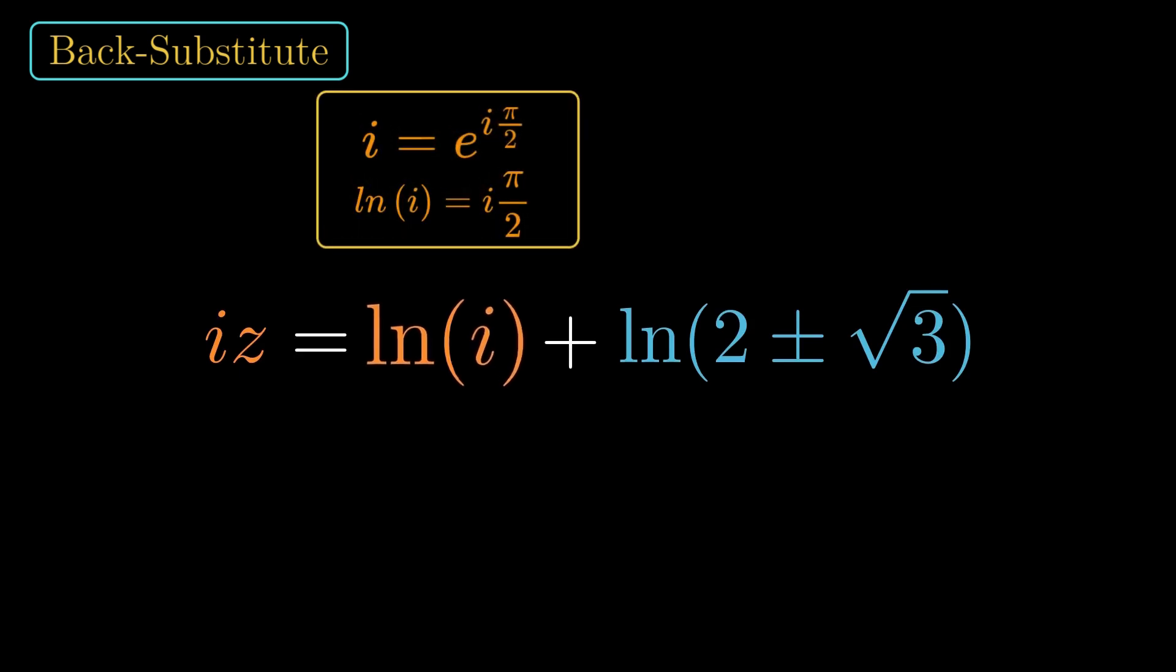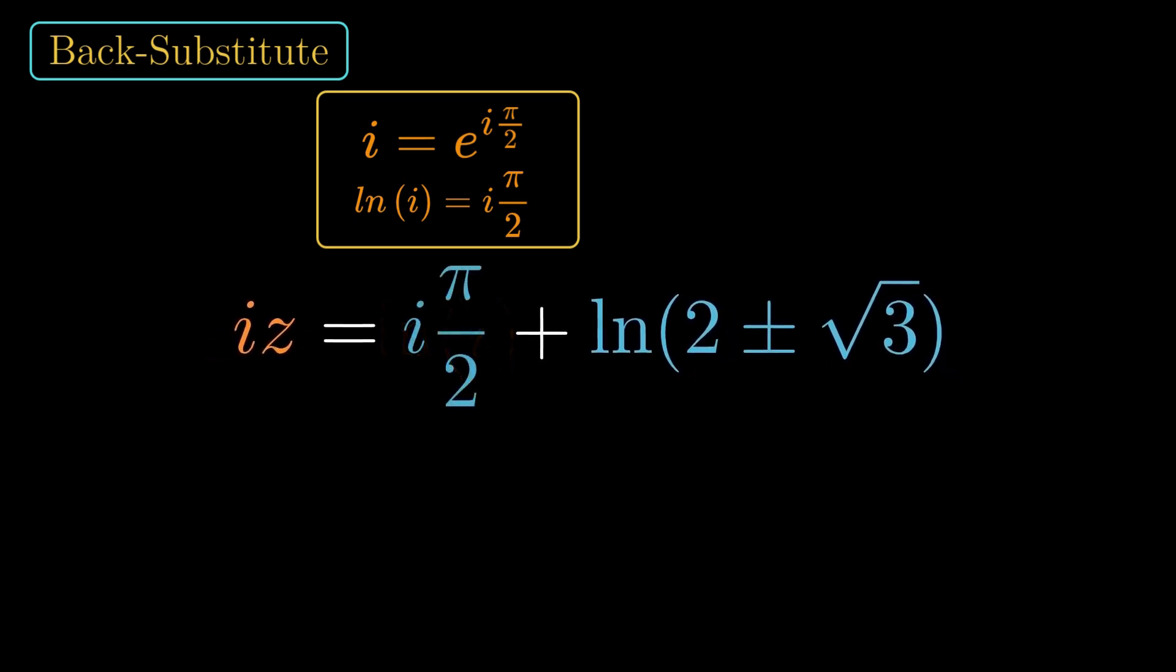And here's the key identity, ln of i is i pi over 2. So we have iz equals i pi over 2 plus ln 2 plus or minus root 3.